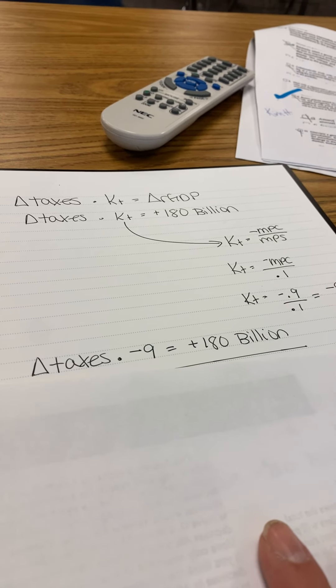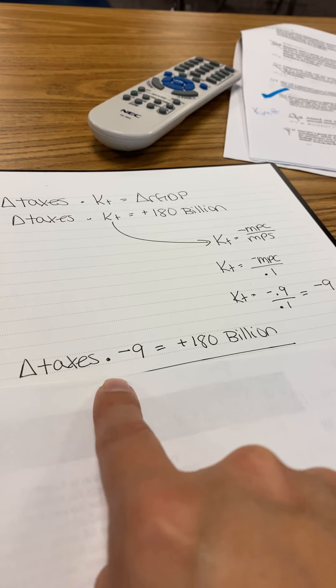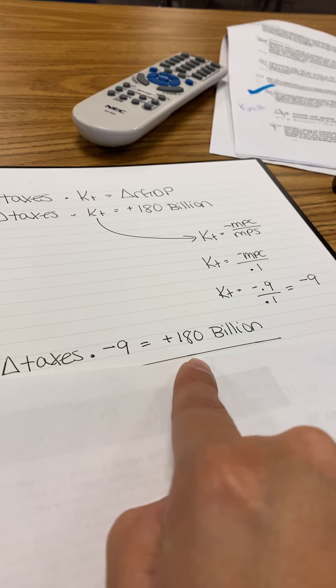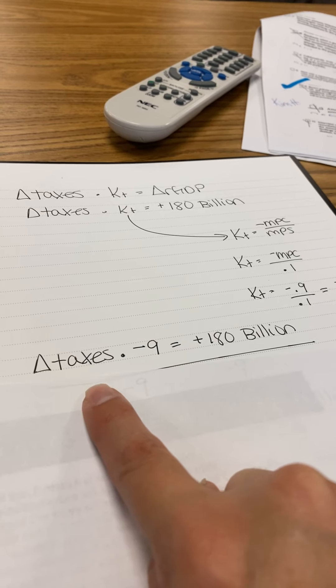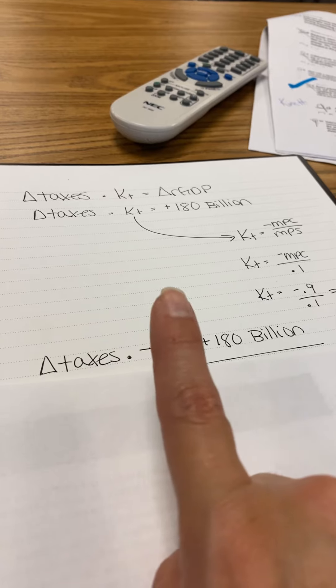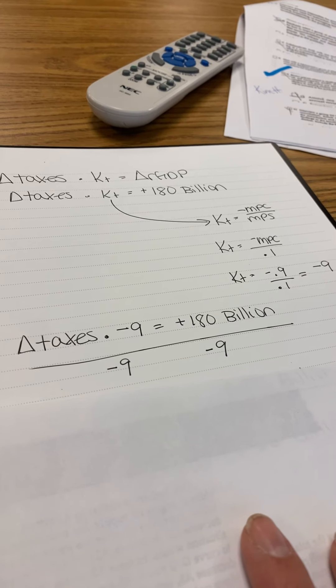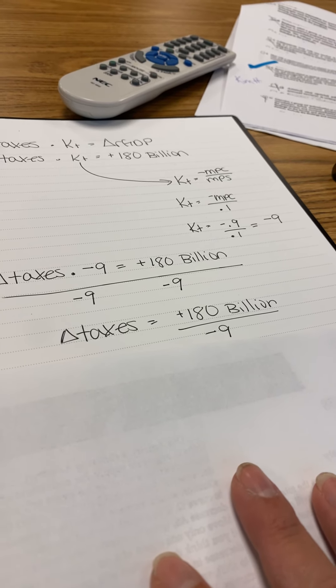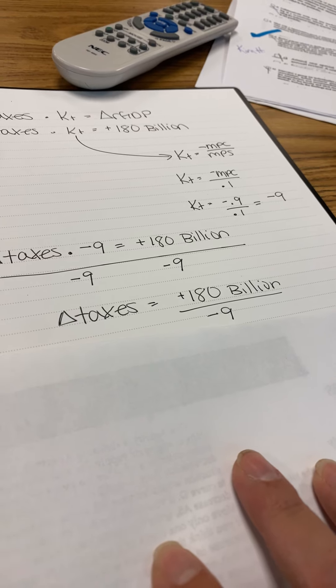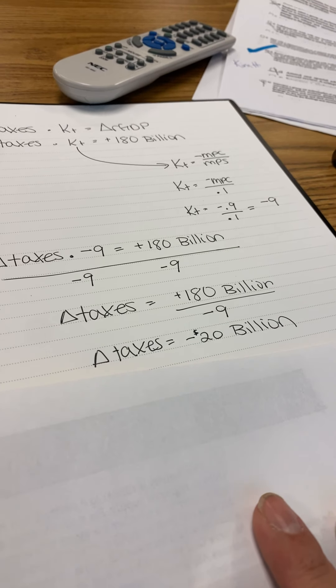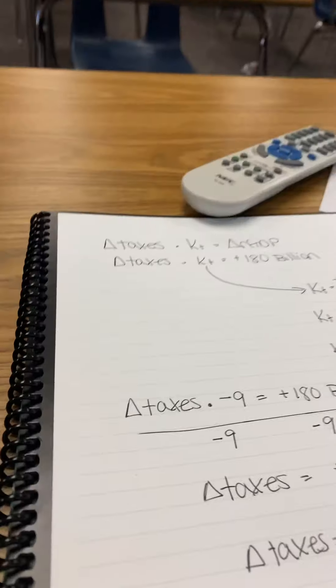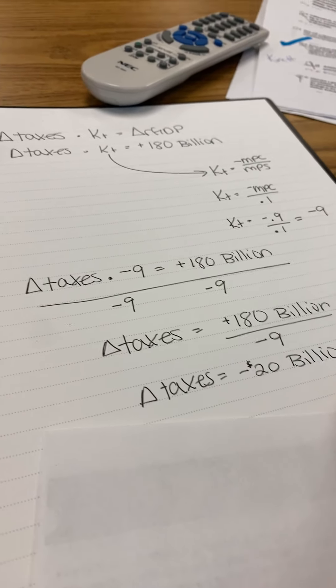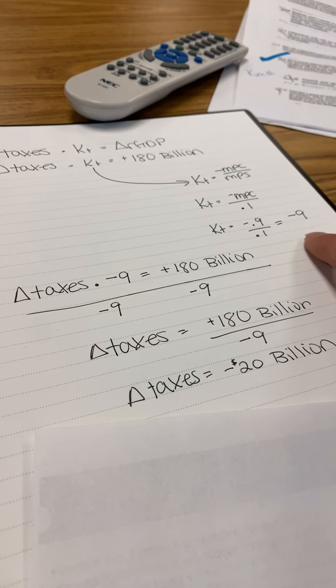So I'm going to plug that in. Change of taxes times negative 9 as our tax multiplier equals $180 billion. What times negative 9 is $180 billion? I divided by 9 on both sides. Taxes equals $180 billion divided by negative 9, which is negative $20 billion. So the change of taxes that caused GDP to go up by $180 billion, they must have cut taxes by $20 billion because the multiplier was negative 9.